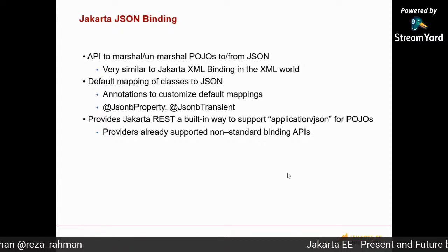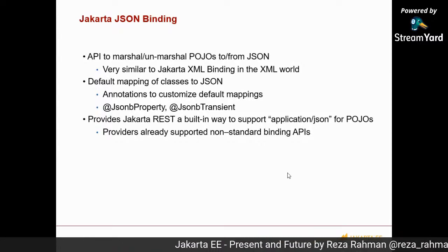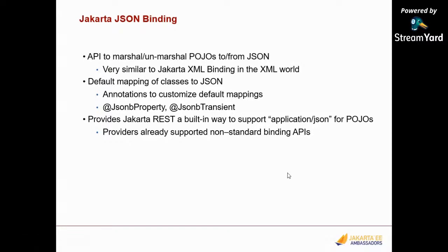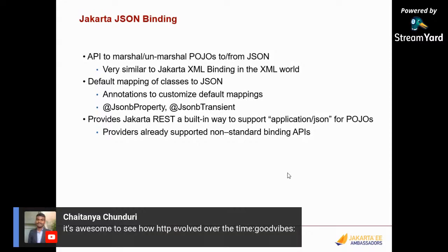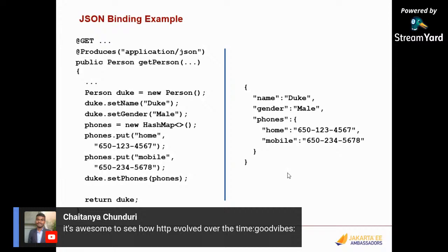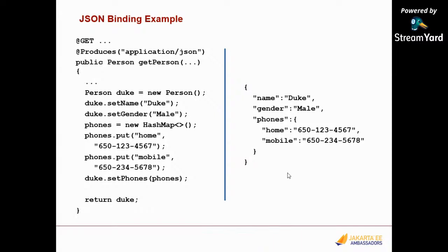All of this was possible since Java EE7, but done in a non-standard way through proprietary APIs that you needed to specifically configure. Here's a simple example: producing an application/JSON type from a Jakarta REST endpoint. We create the person object and return it, and because everything is there by default in the platform, the client will ultimately see a sensible JSON representation of the person POJO. It's really as simple as that. You can put annotations in your POJO to change behavior, but that's about it.